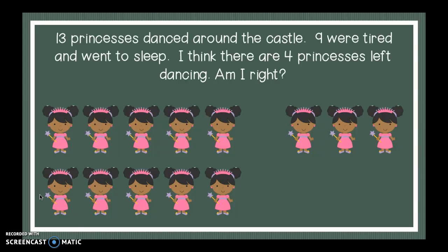It says 13 princesses danced around the castle. Nine were tired and went to sleep. Now, I think there are four princesses left dancing all around. Am I right? What I want you to do is I want you to go ahead and figure out what the answer is. Try to make a 10, and then add the remaining parts after you've subtracted. I want you to press pause while you figure out the answer and let me know. Am I right? Press play when you're ready to check.